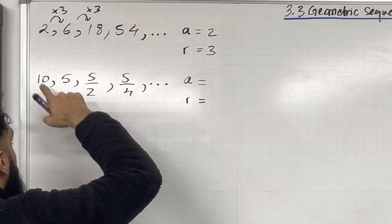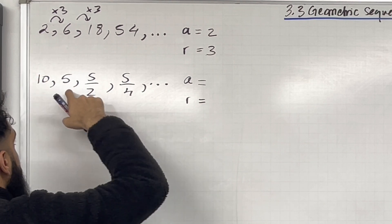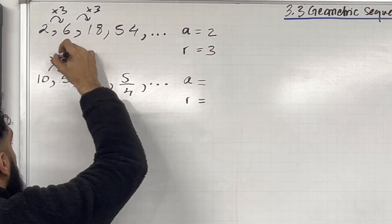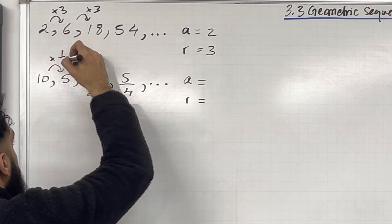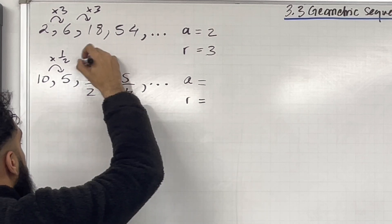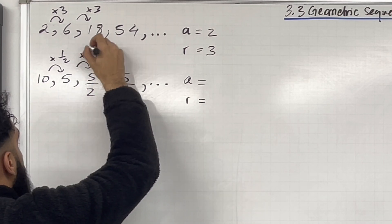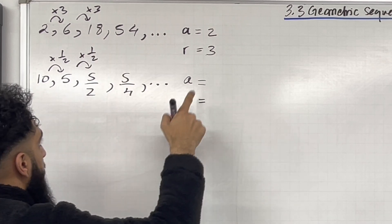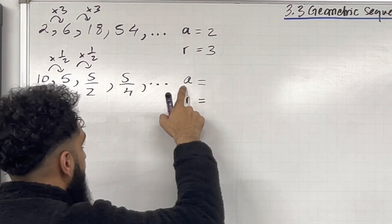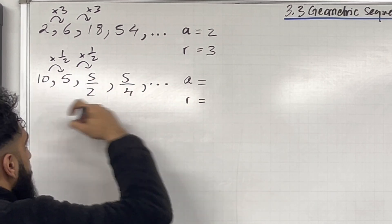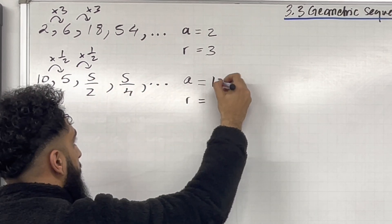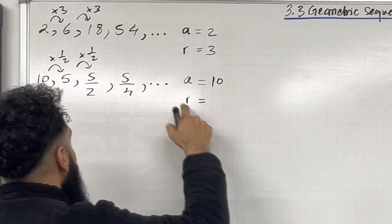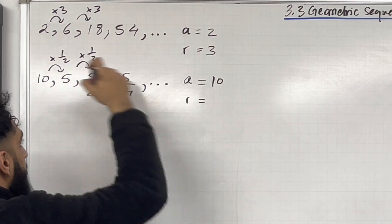For the next sequence, to get from 10 to 5, I multiply by a half. From 5 to 5/2, I multiply by a half, and so on. A is the first term — in this case, A equals 10. R is the common ratio — in this case, R is a half.